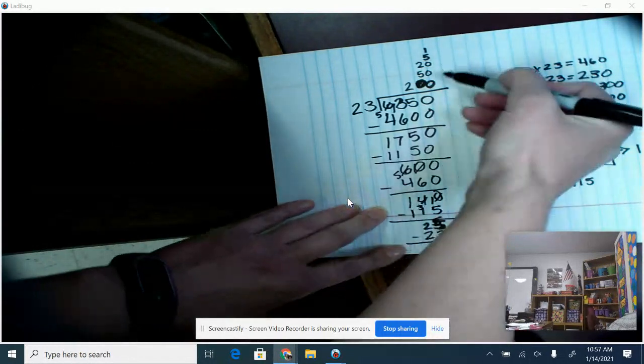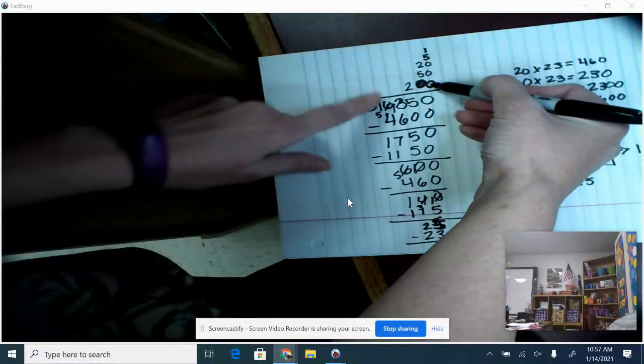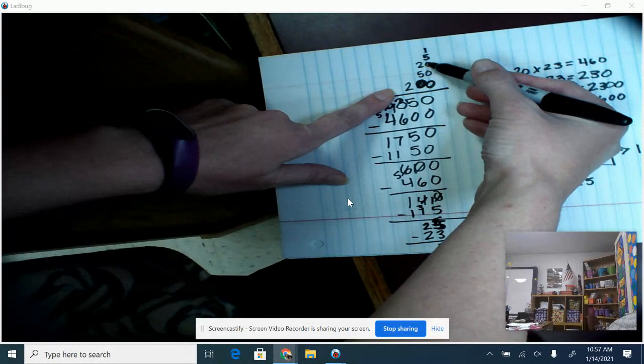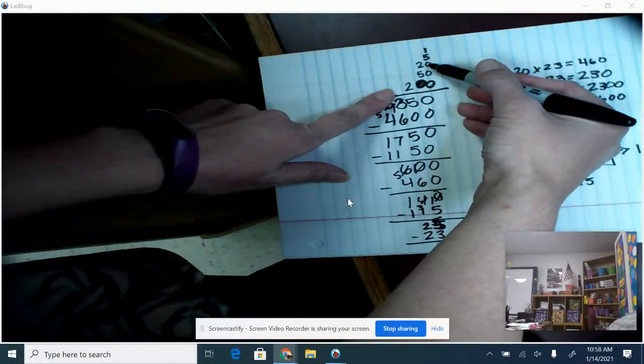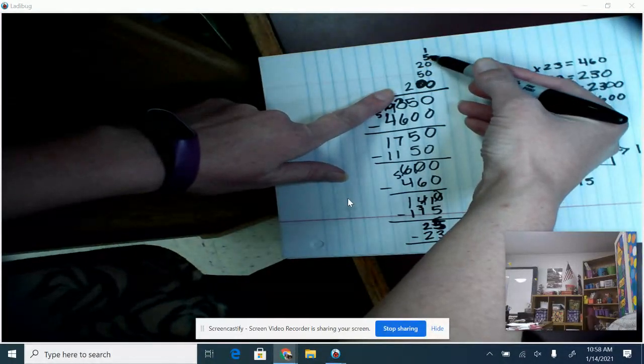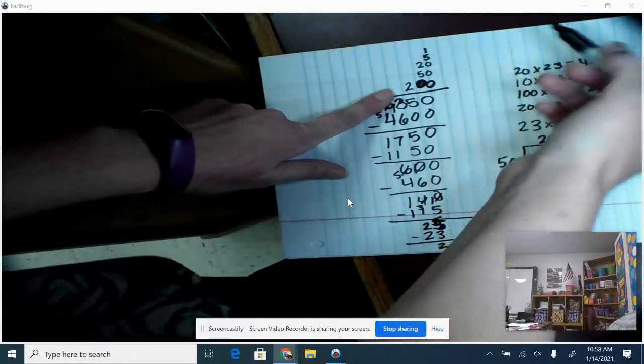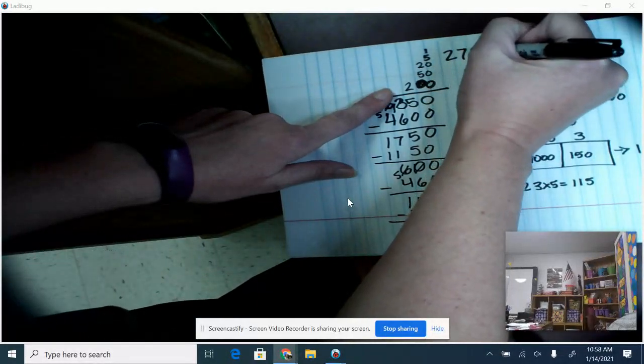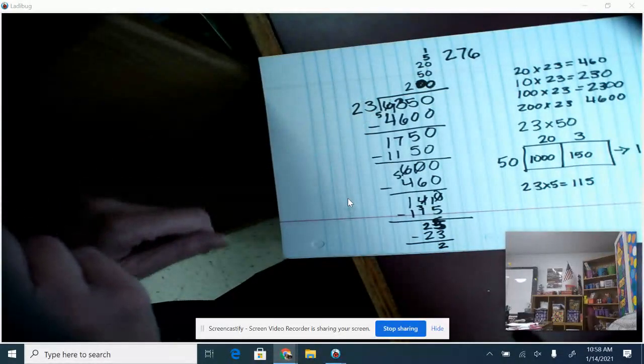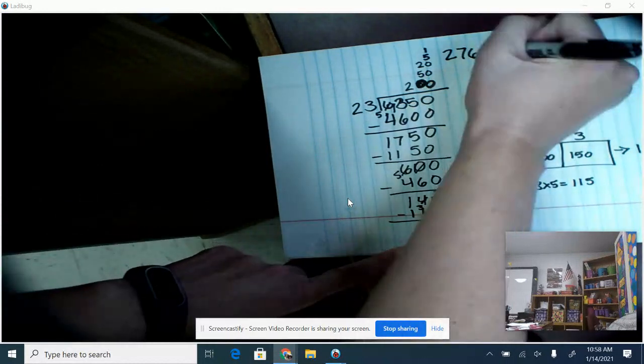So now I'm going to add these together. So 200 plus 50 plus 20 – that gives me 270. 270 plus 5 would be 275 plus 1 – 276. So 276, and then I have a remainder of 2.